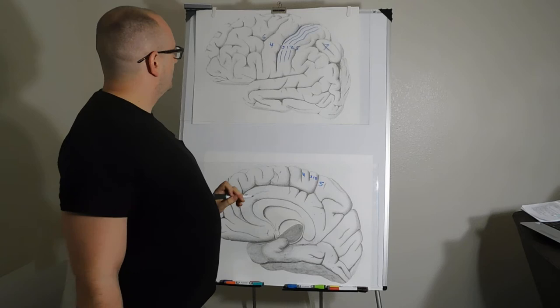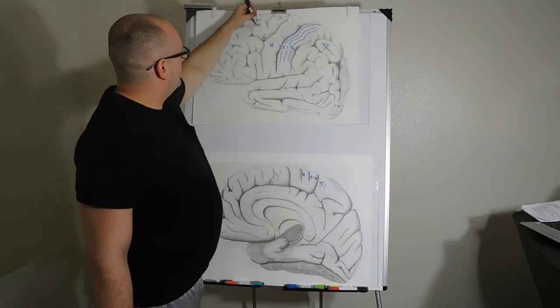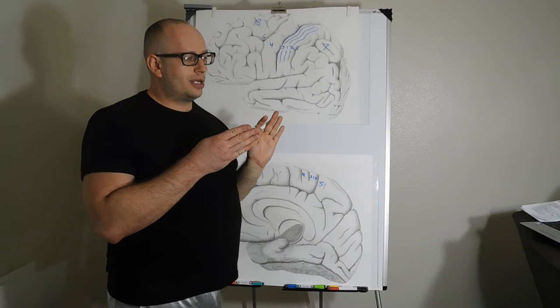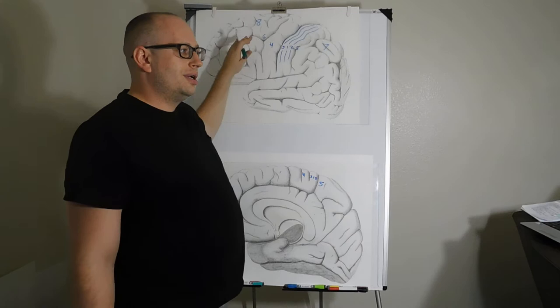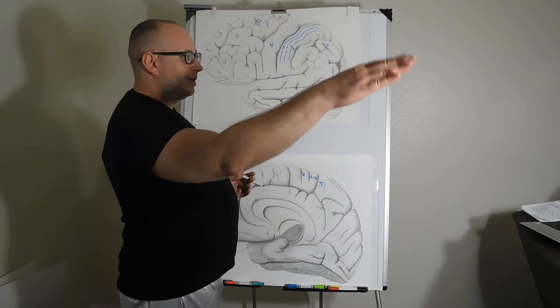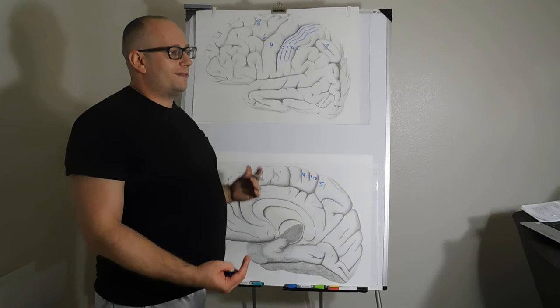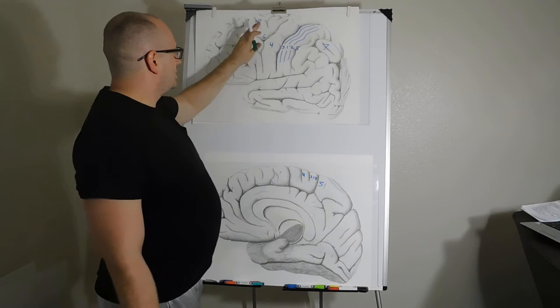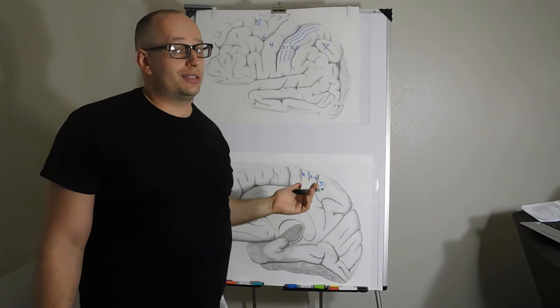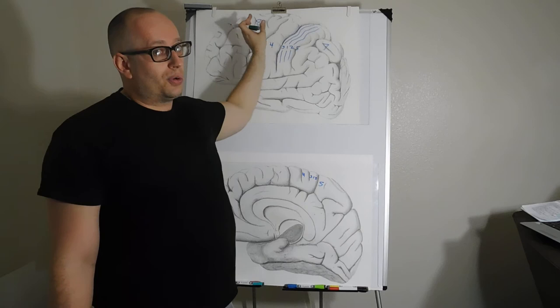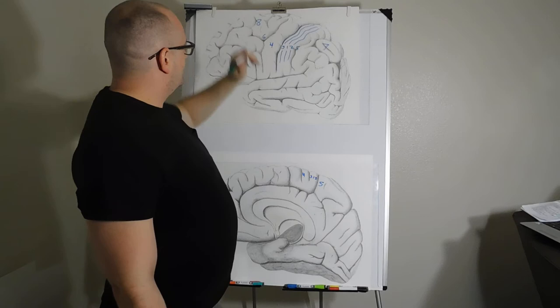Brodmann area 8 is your frontal eye field, up in this region, which controls saccadic eye movements — the way your eyes jump from one object to another. If you damage this area, you can't consciously look at something on command, though reflexive eye movement is preserved. This area can heal in about two to four weeks as it's quite plastic, and is also important for attention and endogenous attention as part of the dorsolateral prefrontal cortex.